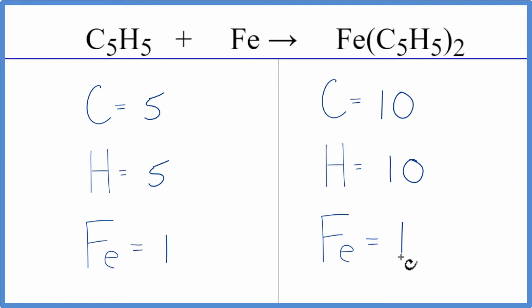So to balance the equation, it looks pretty straightforward. We have two of these here. Let's put a coefficient of two in front. And that means we have five times two, that'll give us ten carbons. And then this two, it applies to everything here. Five times two, that gives us ten hydrogens.